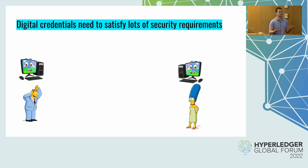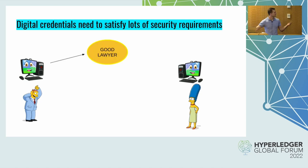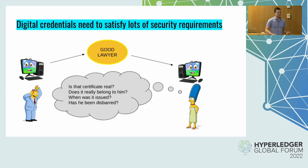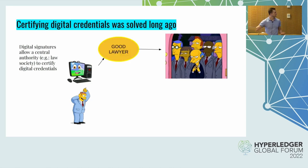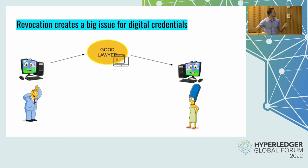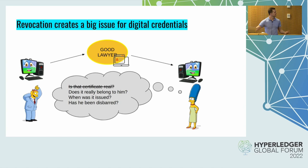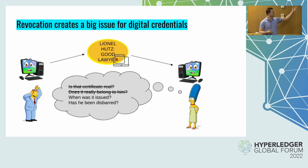A lot of security requirements we need from a credential are simply solved by a digital signature. You can have a certificate that's signed saying 'I'm a good lawyer,' and you send it to the client. The client wonders: is it real? Does it really belong to this lawyer? A digital signature satisfies most of this. The law society acts as some sort of authority — the lawyer sends information to the law society, who signs it and returns it. When the lawyer presents it to the client, the client has the law society's public key and can verify it's a real certificate. You can jam as much information as you want into this — name, date of issue.